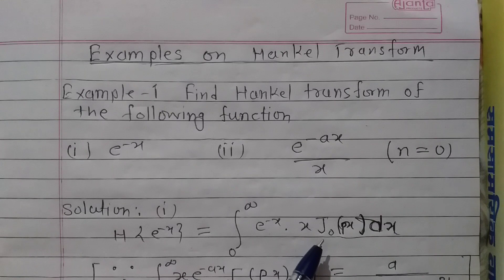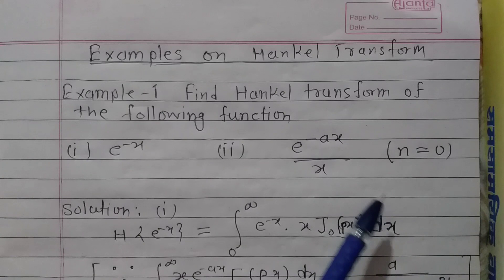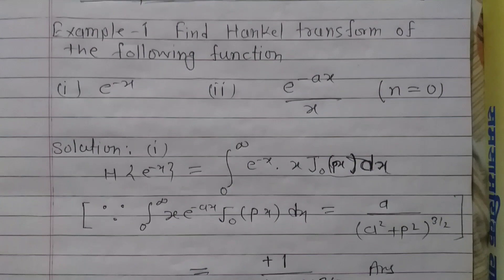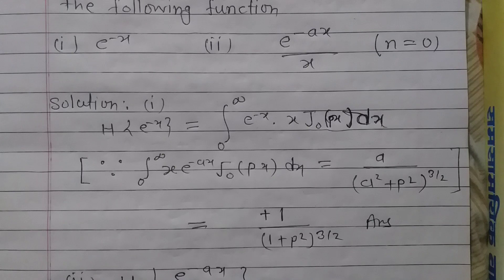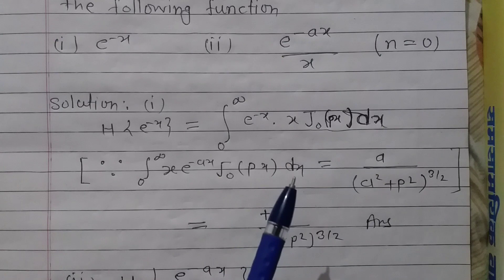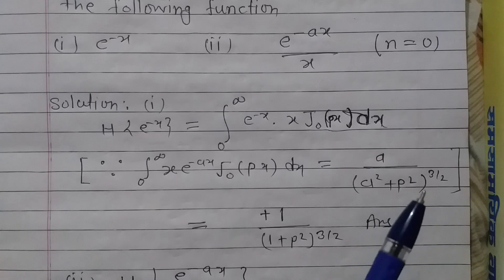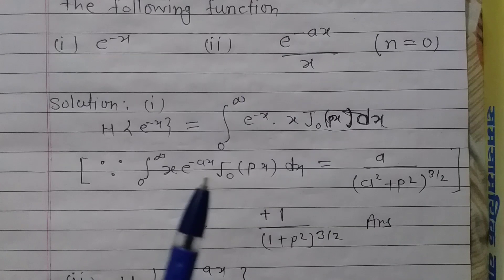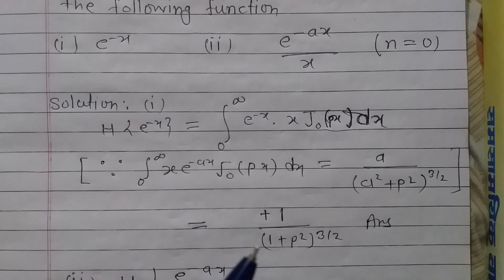In place of n we have 0, since it is given that n is 0. So the Henkel transform of e raised to the power minus x is the value of this integral. From the theory of Bessel's functions of the first kind, we know the value of this integral. The general result is: integration from 0 to infinity of x e raised to the power minus ax times J₀(px) dx equals a upon (a² + p²) raised to the power 3/2. So, putting a equals to 1 gives us the answer of this example.